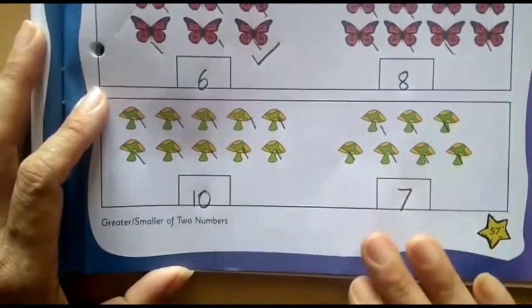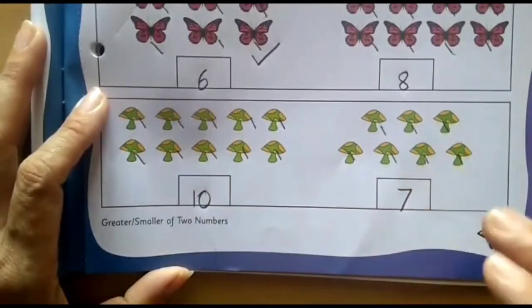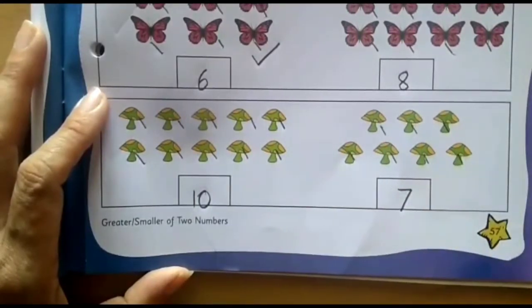So we have covered both the numbers. Now, which number I said first and which number I said later? Because the number which I have said first, that will be the smaller number. And the other number is more than that, greater than that.